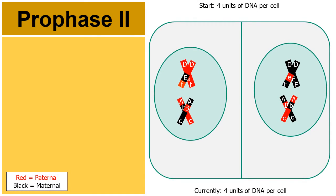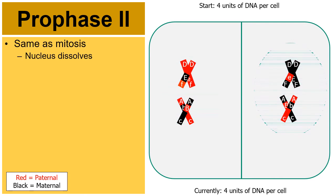Now we start the next round — meiosis II. It begins with prophase II (that's a Roman numeral II). At this point it is really just the same as mitosis. The nucleus is going to re-dissolve, which is why sometimes it doesn't even bother to reform during telophase I — if it does reform, it will just re-dissolve during prophase II.